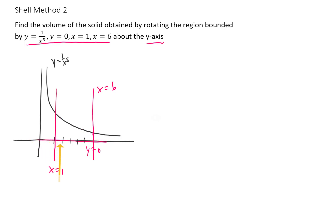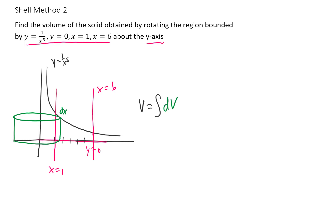The shell method allows us to slice our region this way when rotating around the y-axis. When we take that region and rotate it, we get a big cylindrical shell. The width of the shell is dx, and if we add the volumes of all these shells together using integration, we will get the volume. This volume is the same as what we would find using the washer method, but this is a slightly more convenient integral.